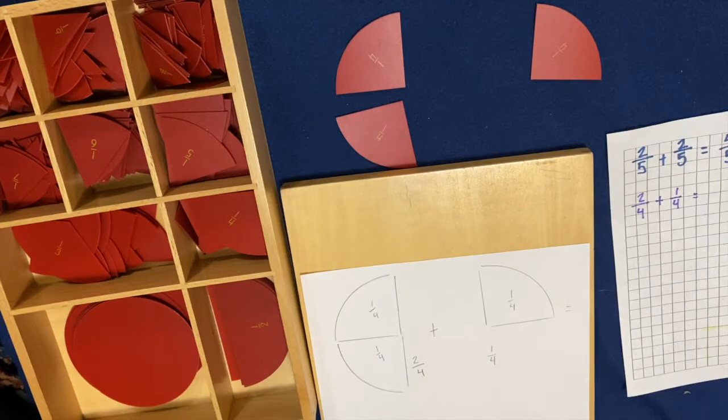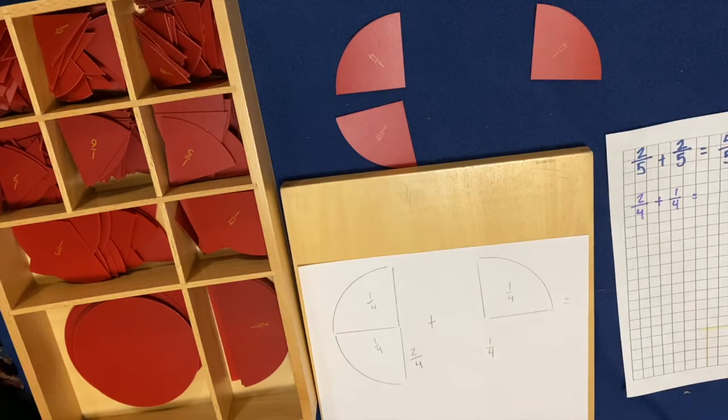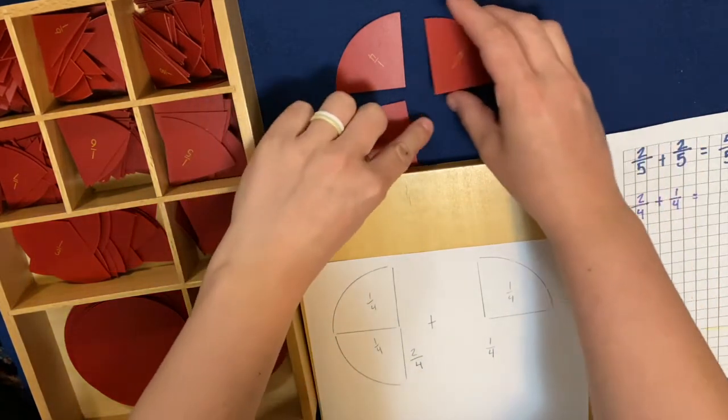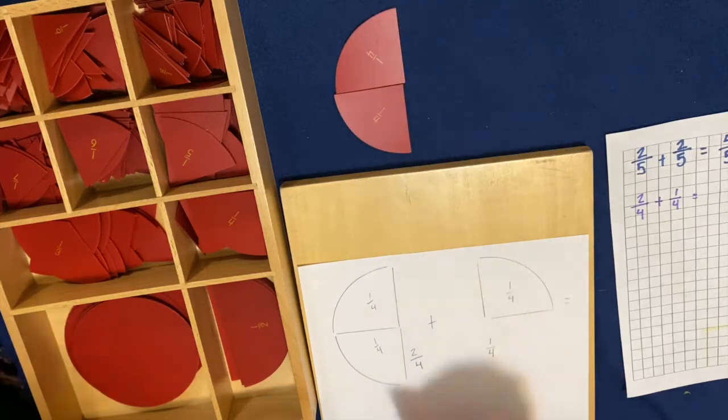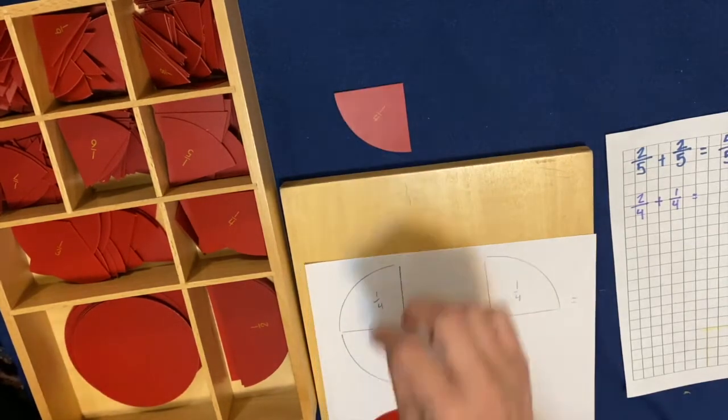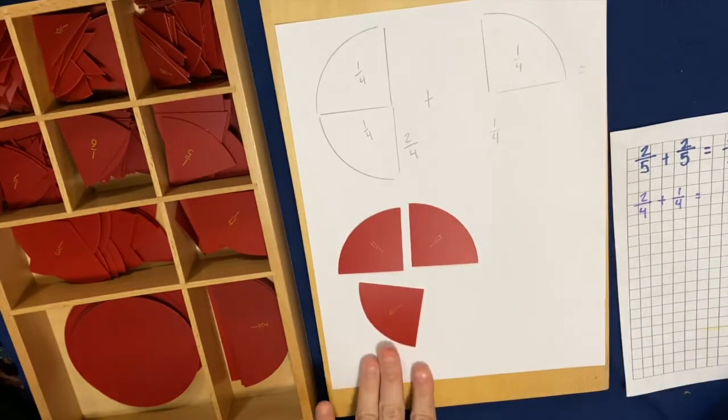So I'm going to do two-fourths plus one-fourth. So for tracing, I'm going to trace these. I'm using marker so that you guys can see it on the camera, but it is important that you are using pencil in case you make a mistake. So we have both of our problems set up. Now it's time to find the answer. So we know when we add things, we push them together. So how many fourths do you see there now? One, two, three. So it equals three-fourths.